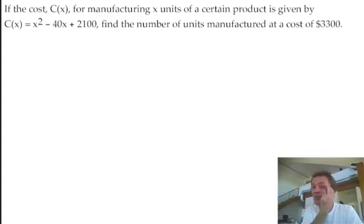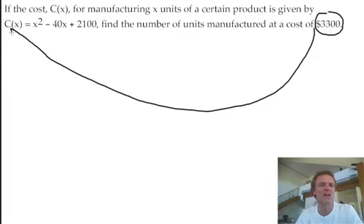But it says, right, find the number of units X. Again you're finding X, manufactured at a cost C, think about it, of 3300. So what I'm trying to say is that 3300 is the cost I'm going to stick right there.